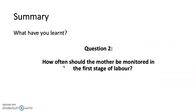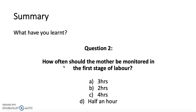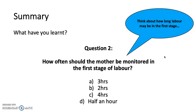Question two: how often should a mother be monitored in the first stage of labour? Is it every three hours, every two hours, or every half an hour? The answer is every four hours. The first stage of labour is arguably the longest, as the cervix dilates, and it can be up to eighteen hours — especially in nulliparous women.